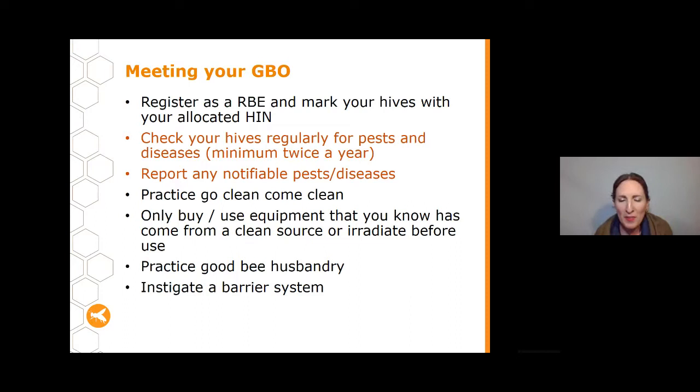The three main pest groups we're going to talk about tonight are Varroa, Tropilaelaps, and Braula fly. All of these are reportable or notifiable pests in Queensland, so you need to let the Department of Agriculture and Fisheries know if you suspect or find them.